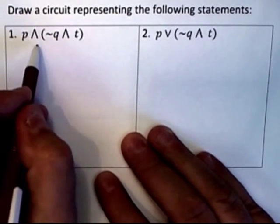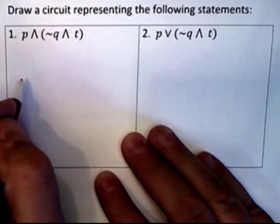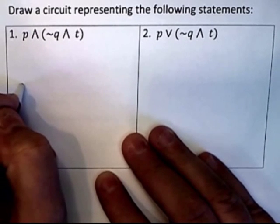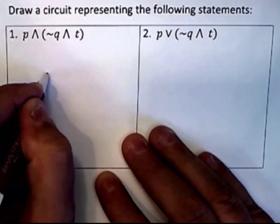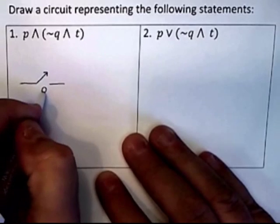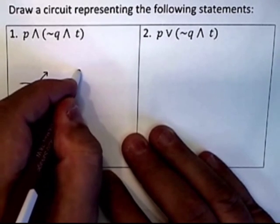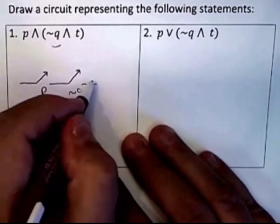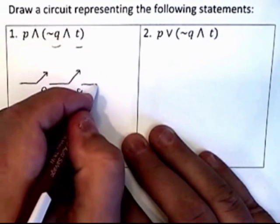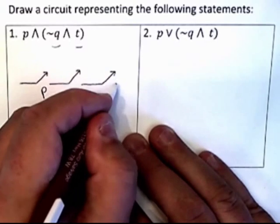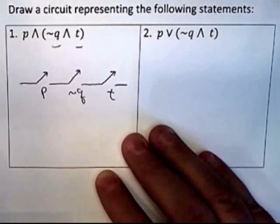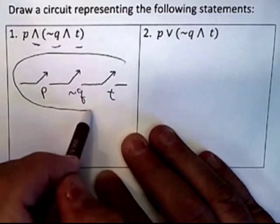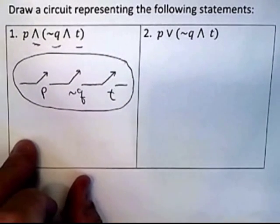Let's start with the first problem. Notice that everything in here is an AND, so everything is in series. I've got one, two, three. I'll draw a circuit gate to represent P, a circuit gate to represent NOT Q, and a circuit gate to represent T — labeling them properly. Everything is in series. Very easy if you understand the basics.